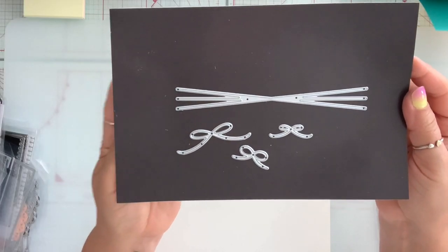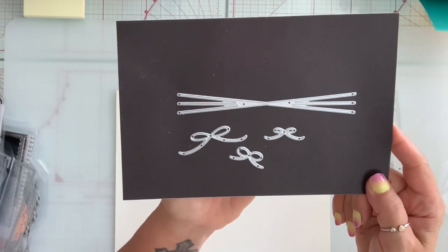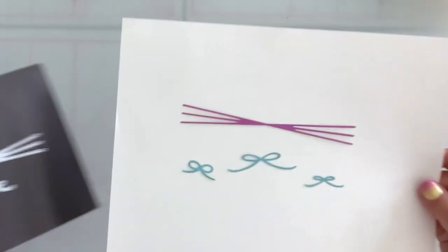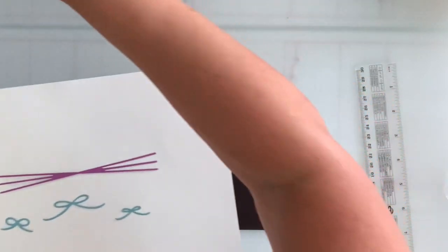Next, I have this die set and it comes with three sizes of bows. And this is how it die cuts.